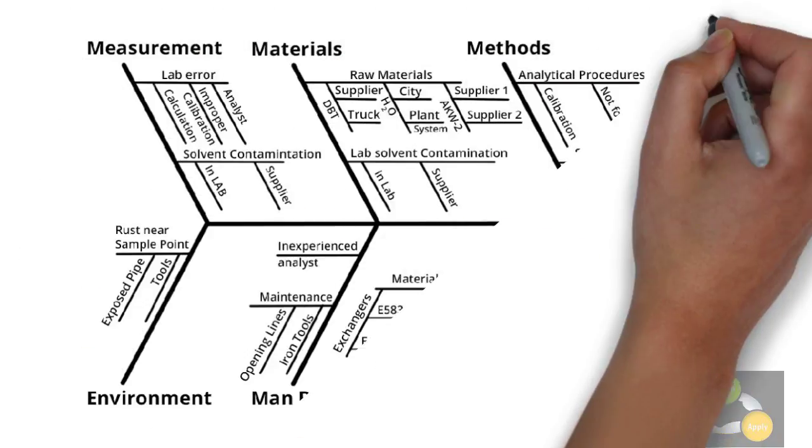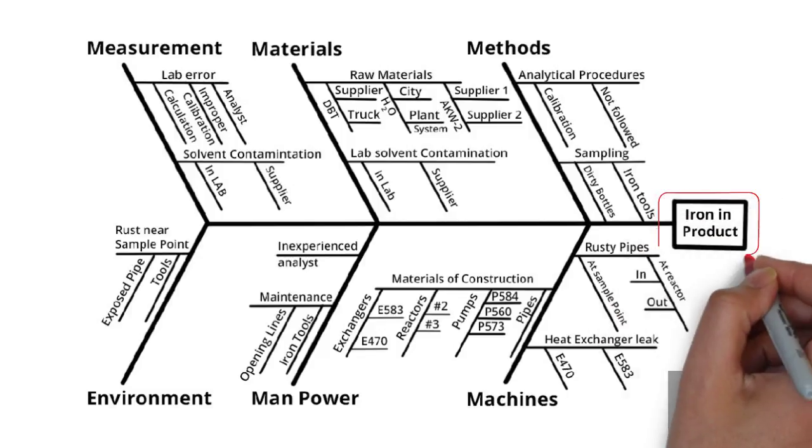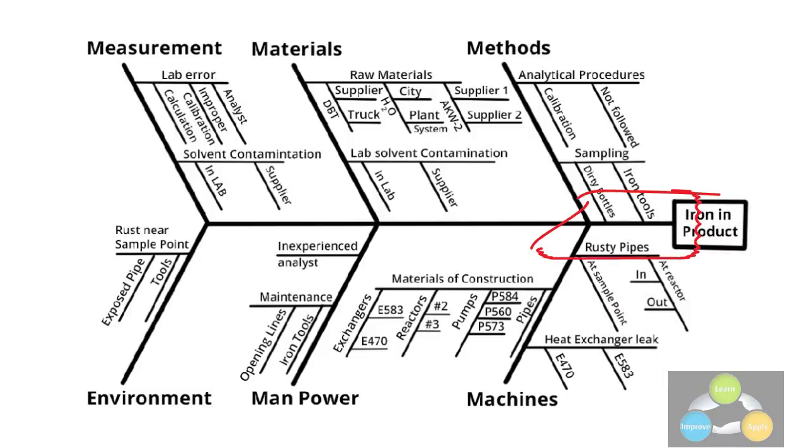Step 1: Agree on a problem statement, the effect. Write it at the center right of the flip chart or whiteboard. Draw a box around it and draw a horizontal arrow running to it. Step 2: Brainstorm the major categories of causes for the problem.